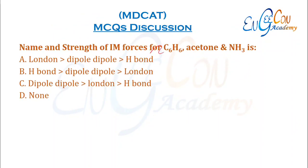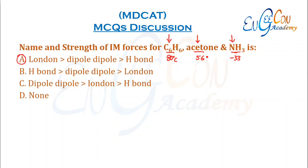Name and strength of intermolecular forces for C6H6, acetone, and NH3: C6H6 has a boiling point of 80°C, acetone is 56°C, and NH3 is −33°C. C6H6 has the greatest London forces, acetone has dipole-dipole forces, and NH3 has hydrogen bonds. The greatest forces are in C6H6, so A is correct.